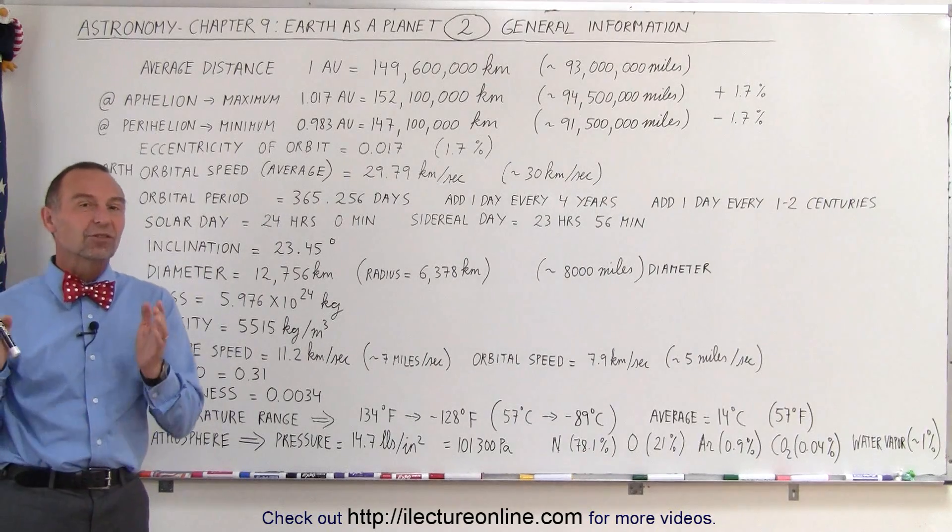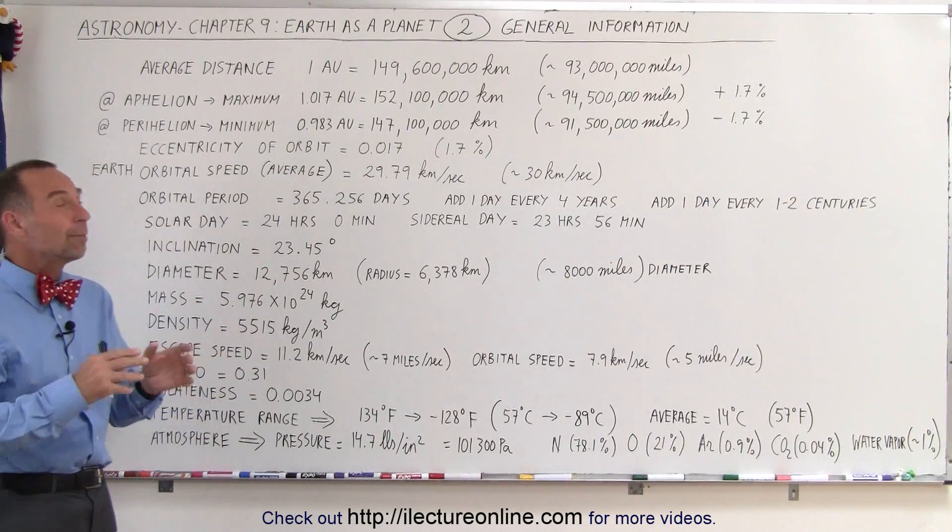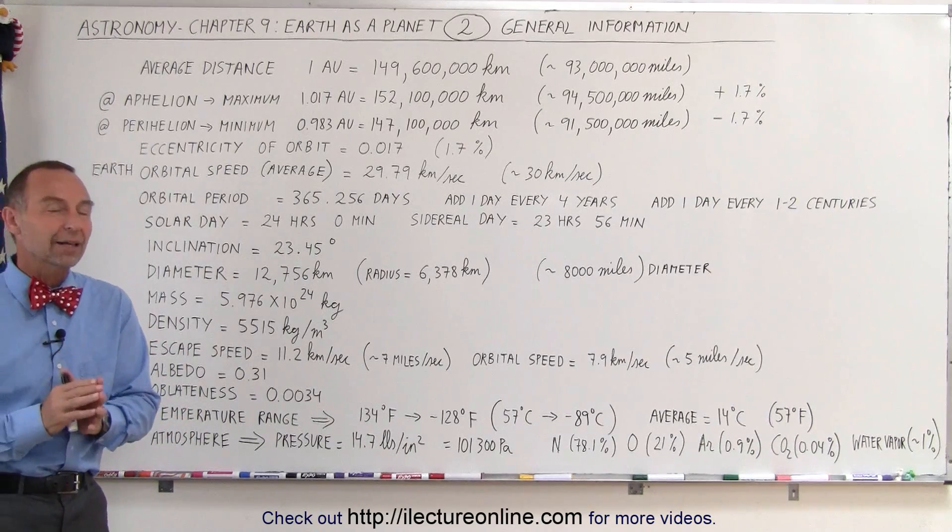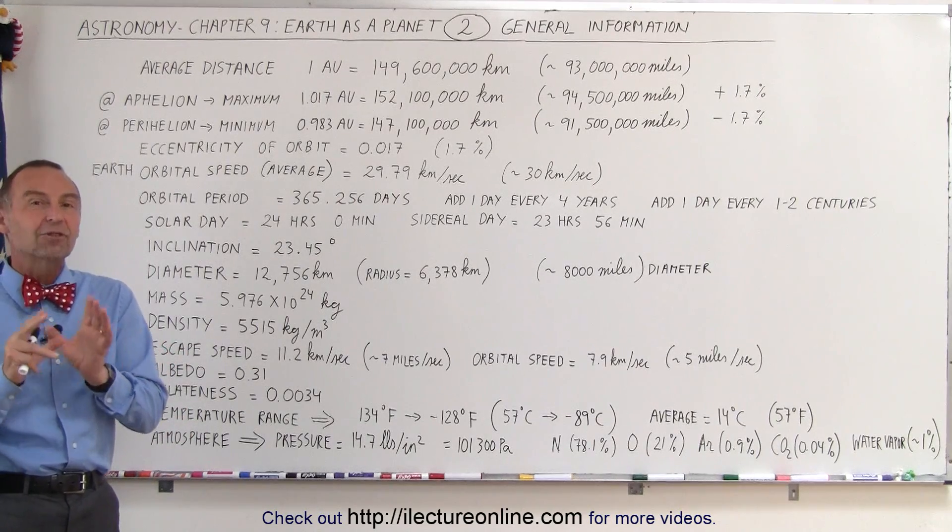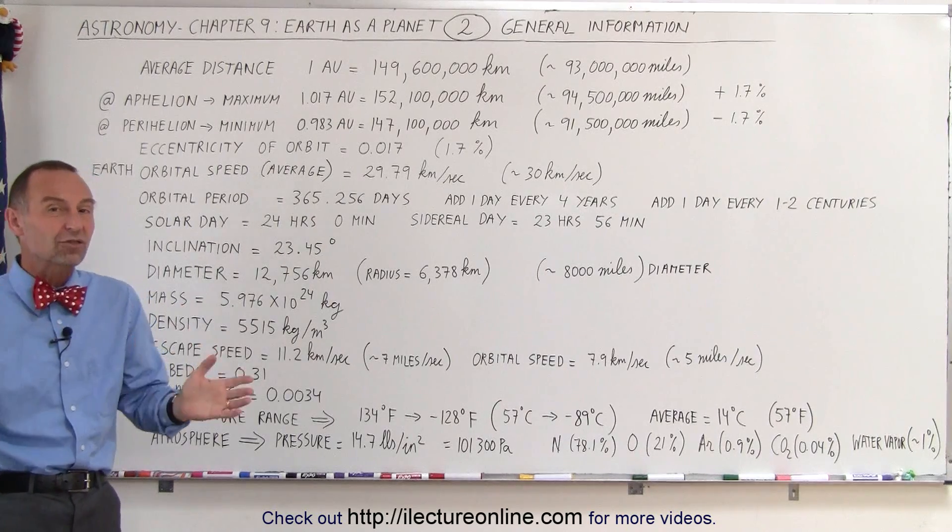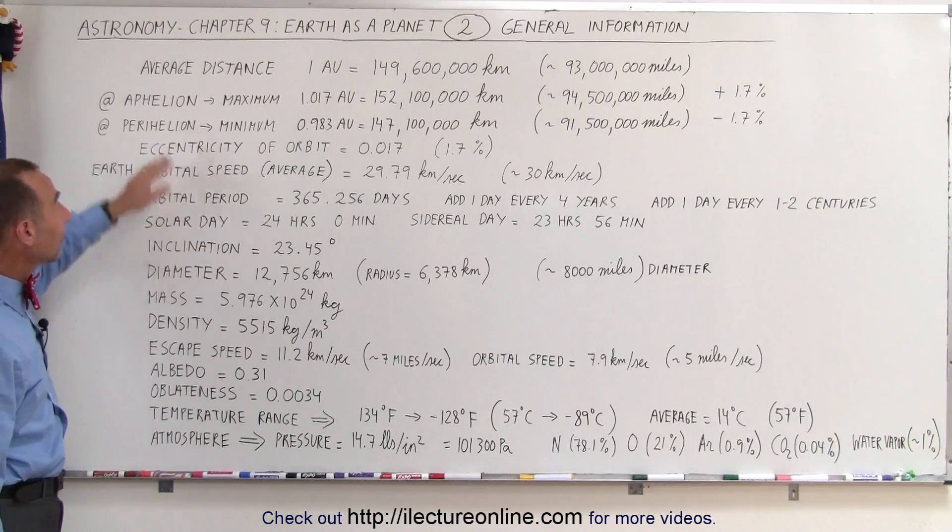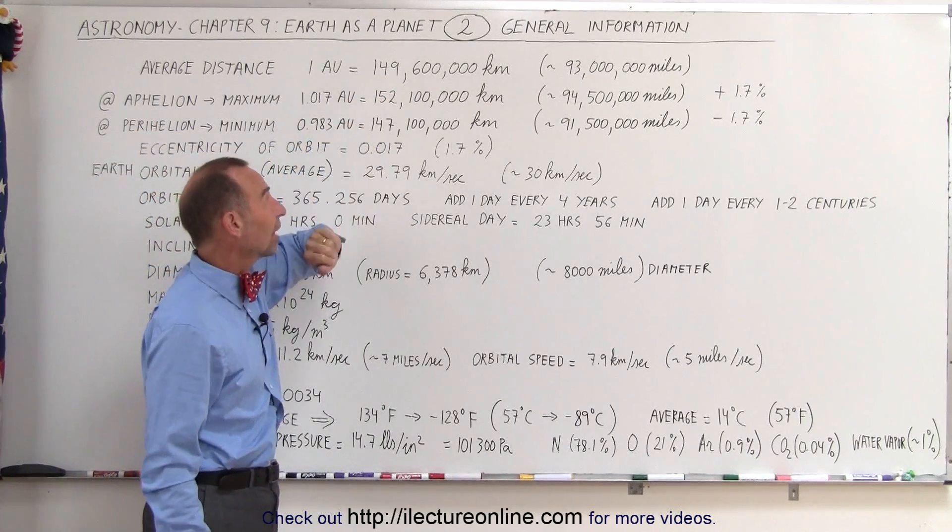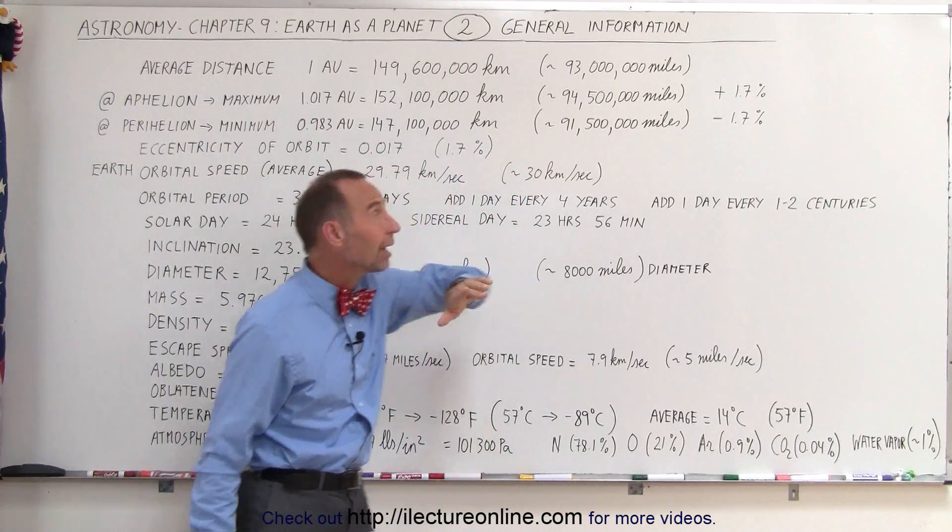The average distance between the Sun and the Earth is typically known to be about 150 million kilometers or 93 million miles. However, those are average distances. Actually, the distance between the Earth and the Sun changes throughout the year.